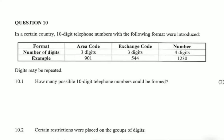In a certain country, 10-digit telephone numbers with the following format are introduced: we have the area code with three digits, the exchange code with three digits, and the number with four digits. Question 10.1 asks how many possible 10-digit telephone numbers could be formed. We are also told that the digits may be repeated.